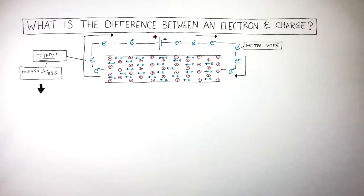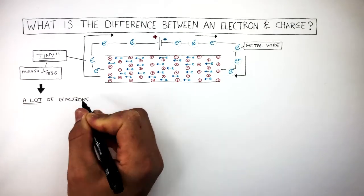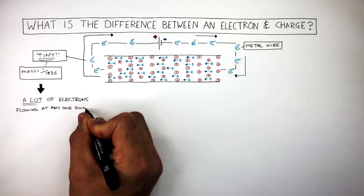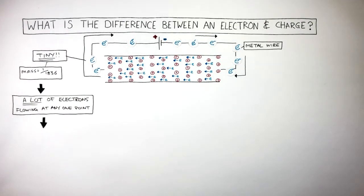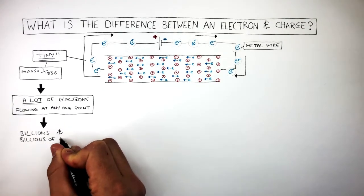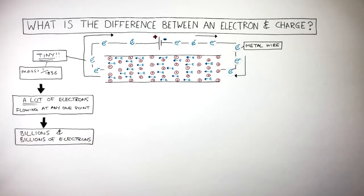Because their mass is so small, there are a lot of electrons flowing at any one point. And I mean a lot of electrons. There are billions and billions of electrons flowing. This makes it difficult to quantify how many electrons are flowing at any one point, and this is a problem. A scientist needs to know how many electrons are flowing at one point.